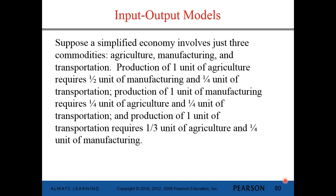Suppose a simplified economy involves just three commodities: agriculture, manufacturing, and transportation. The production of one unit of agriculture requires one-half unit of manufacturing and one-fourth unit of transportation. Production of one unit of manufacturing requires one-fourth unit of agriculture and one-fourth unit of transportation. And production of one unit of transportation requires one-third unit of agriculture and one-fourth unit of manufacturing.